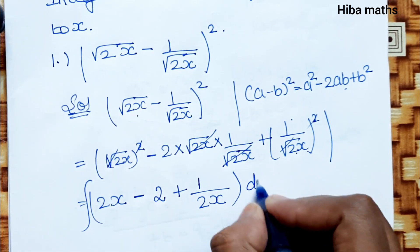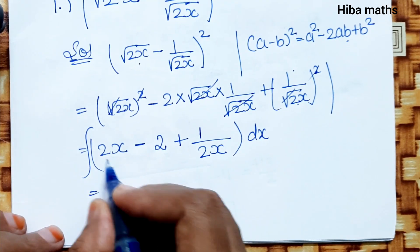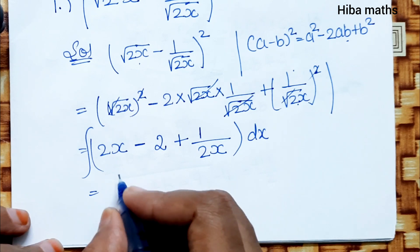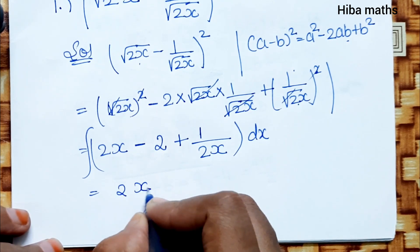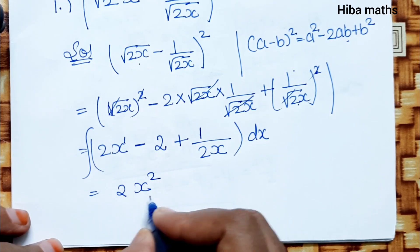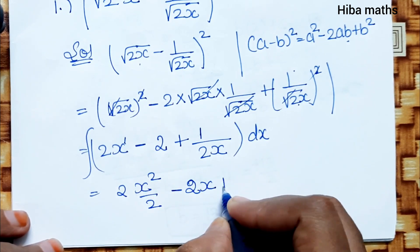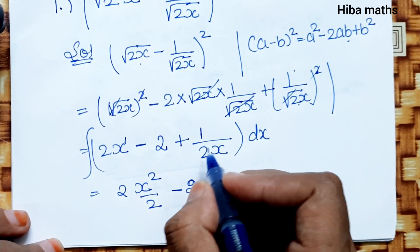Now, if we integrate, we have the integral of (2x - 2 + 1/(2x))dx. For 2x, taking 2 common: 2 times x^(1+1) divided by 2, which gives x². Minus 2 times x gives 2x. And...